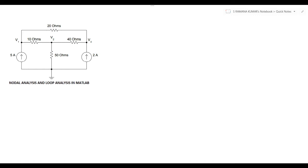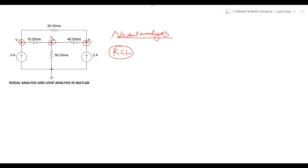Today our topic is node analysis and loop analysis in MATLAB. We took a simple electric circuit which consists of four resistors and two current sources. We will do node analysis first and solve this circuit mathematically, then implement it in MATLAB. To do node analysis, we apply Kirchhoff's Current Law (KCL). There are three nodes: v1, v2, and v3.